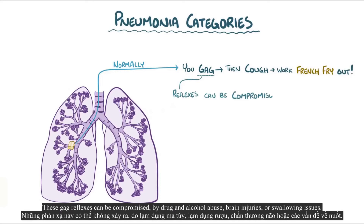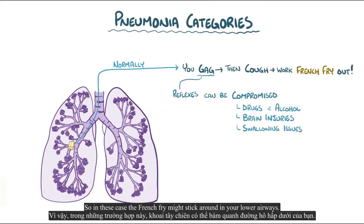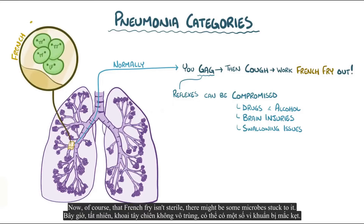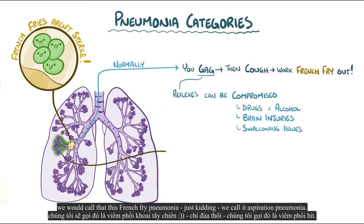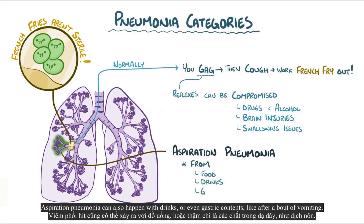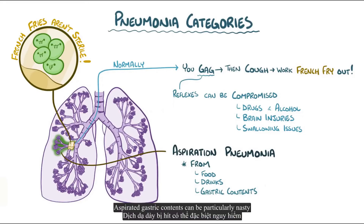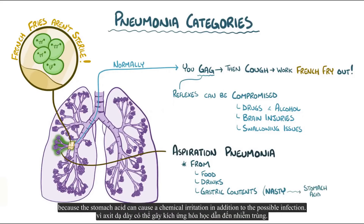These gag reflexes can be compromised by drug and alcohol abuse, brain injuries, or swallowing issues. So in these cases the french fry might stick around in your lower airways. Of course that french fry isn't sterile, and if microbes stuck to it infect the lungs, that's called aspiration pneumonia. Aspiration pneumonia can also happen with drinks or even gastric contents like after a bout of vomiting. Aspirated gastric contents can be particularly nasty because stomach acid can cause a chemical irritation in addition to the possible infection.